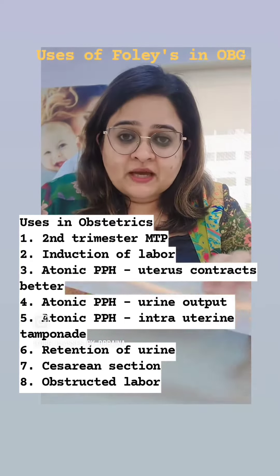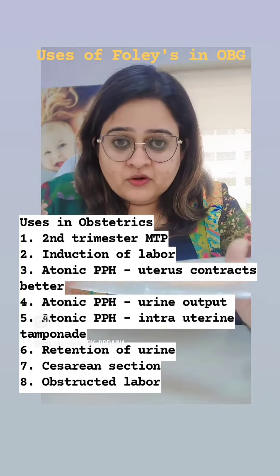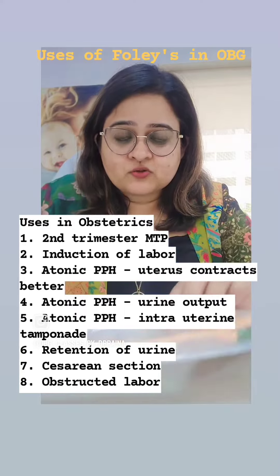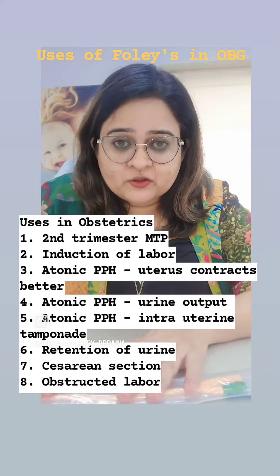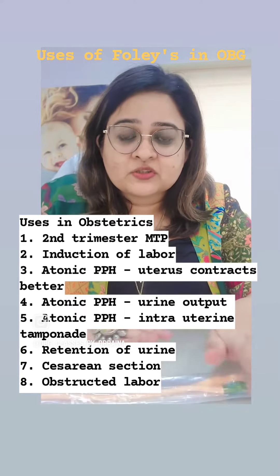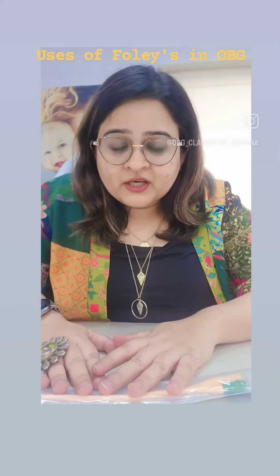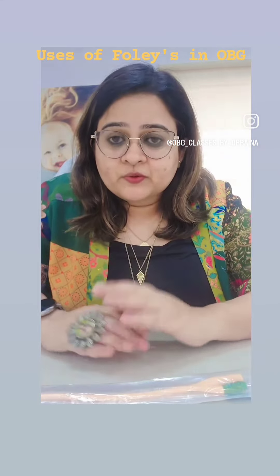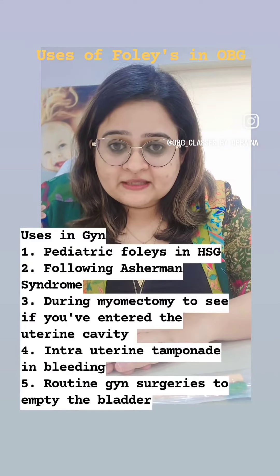In obstructed labour, we keep the catheter in for a prolonged time — around 2 to 3 weeks — to allow continuous drainage of urine and avoid bladder necrosis.